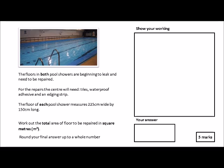Notice that the answer is required in bold square meters, but the measurements are given in centimeters. At level one, they will deal with converting measurements but only within a system — centimeters and meters are both metric, so you're converting within the metric system. Finally, 'round your final answer up to a whole number' tells you the answer will be a decimal.